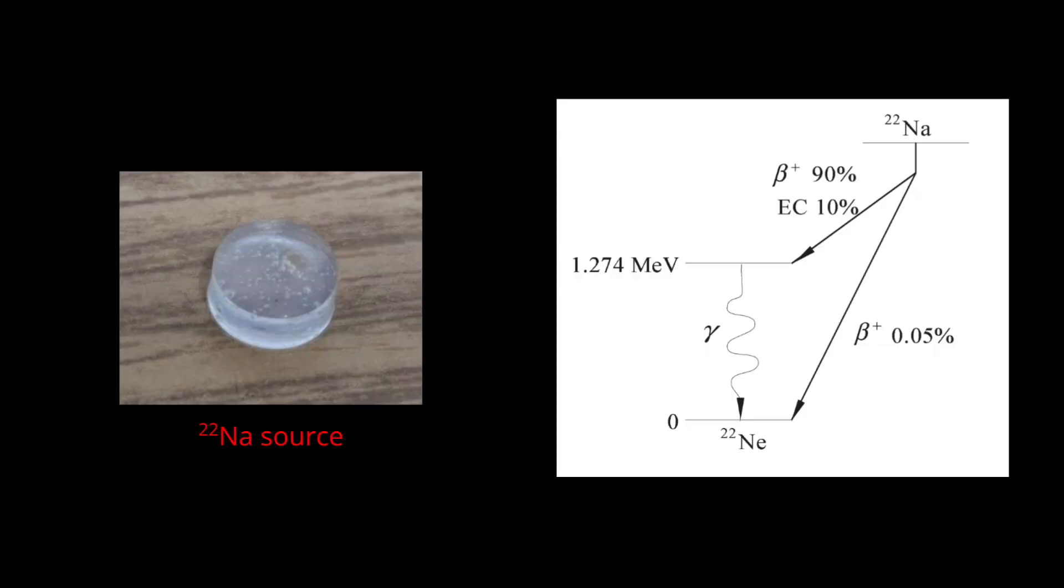I chose to use sodium-22 because it only produces positrons and gamma rays when it decays. It also has a reasonably long half-life of 2.6 years, and can be bought online without a license. I used a source with an activity of 5 microcurie, but found that this was creating way more particle trails than I wanted, so a 1 microcurie source would work just as well.